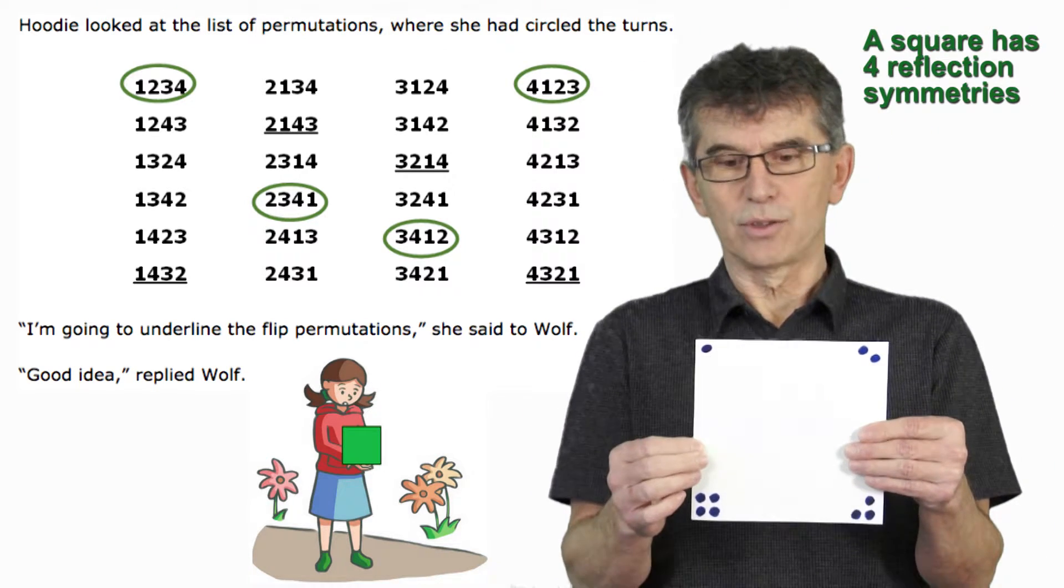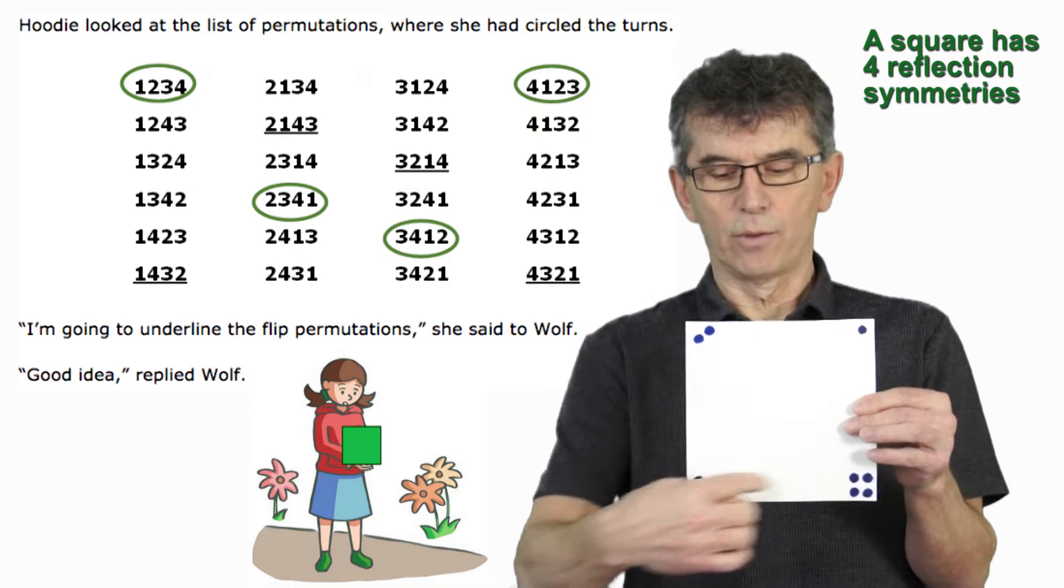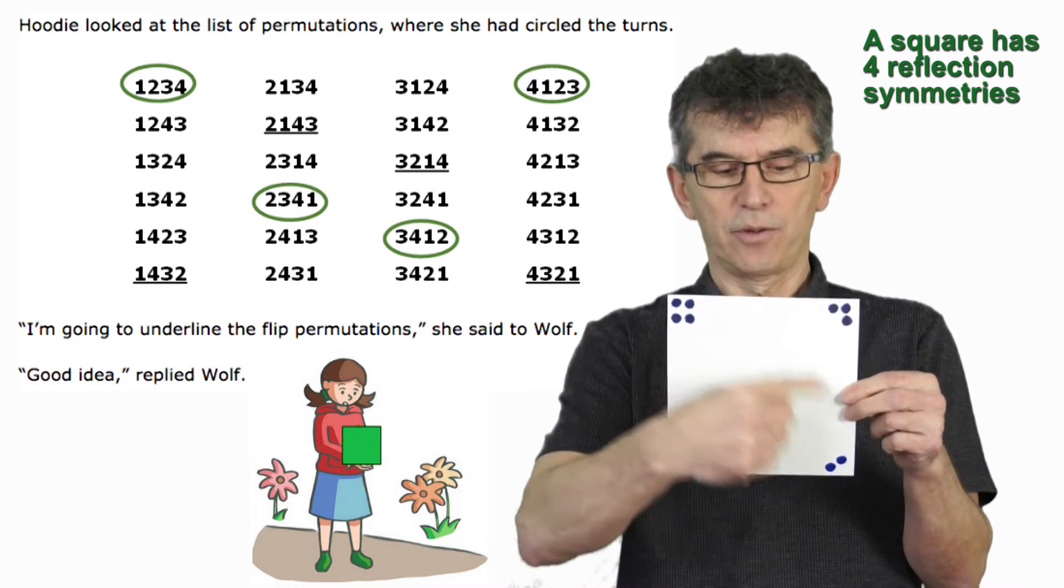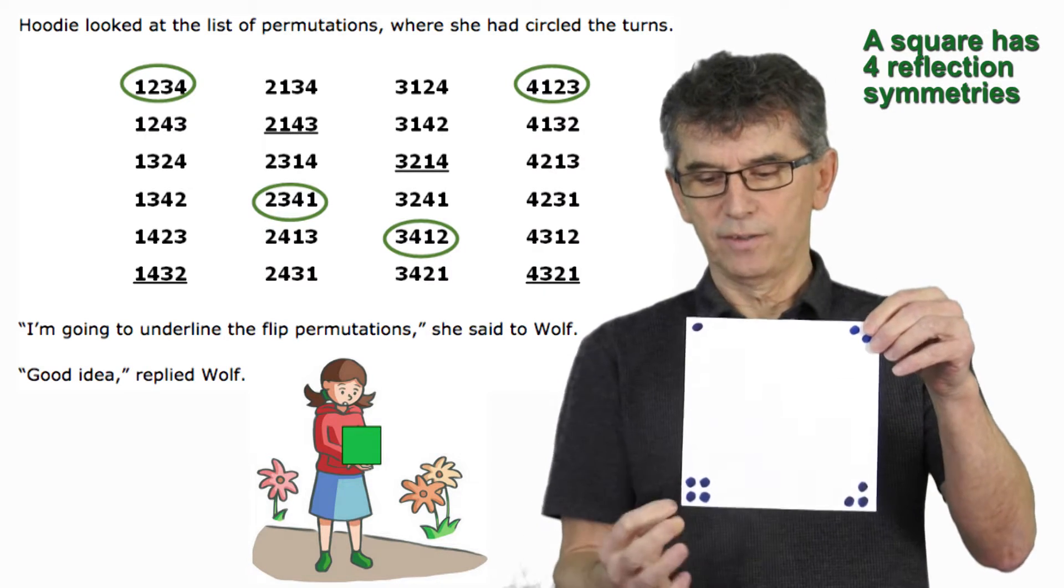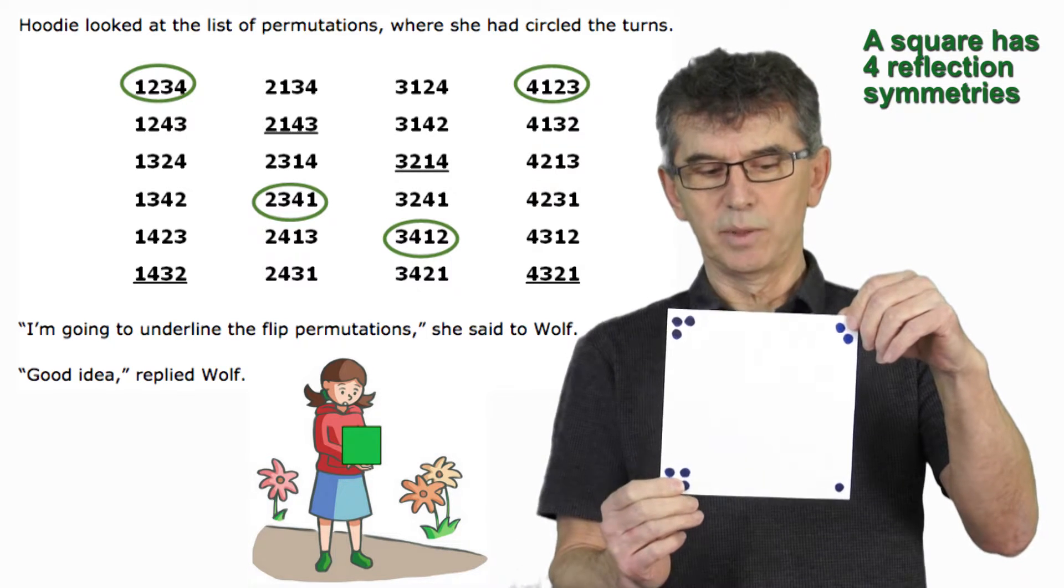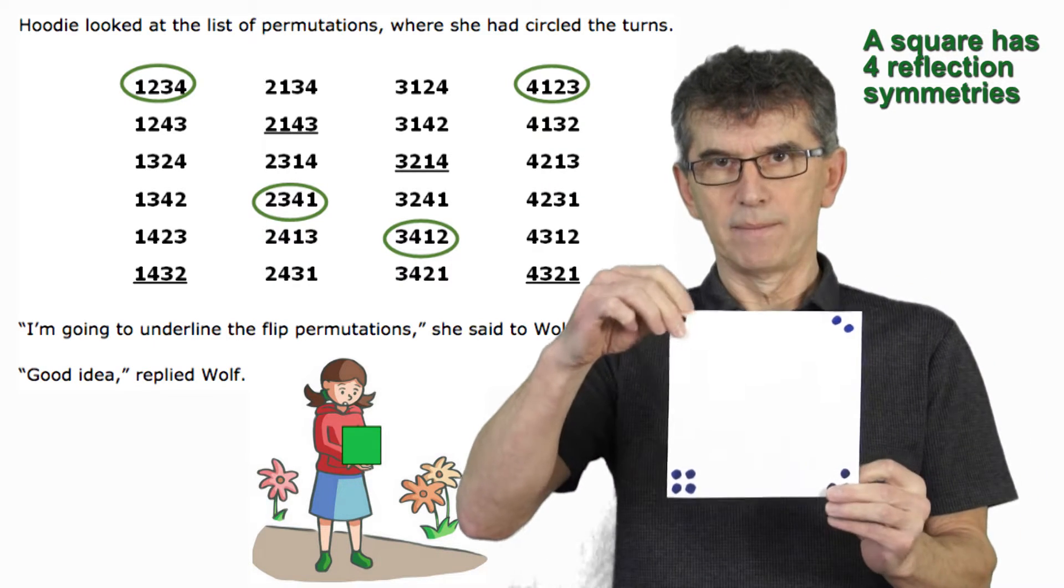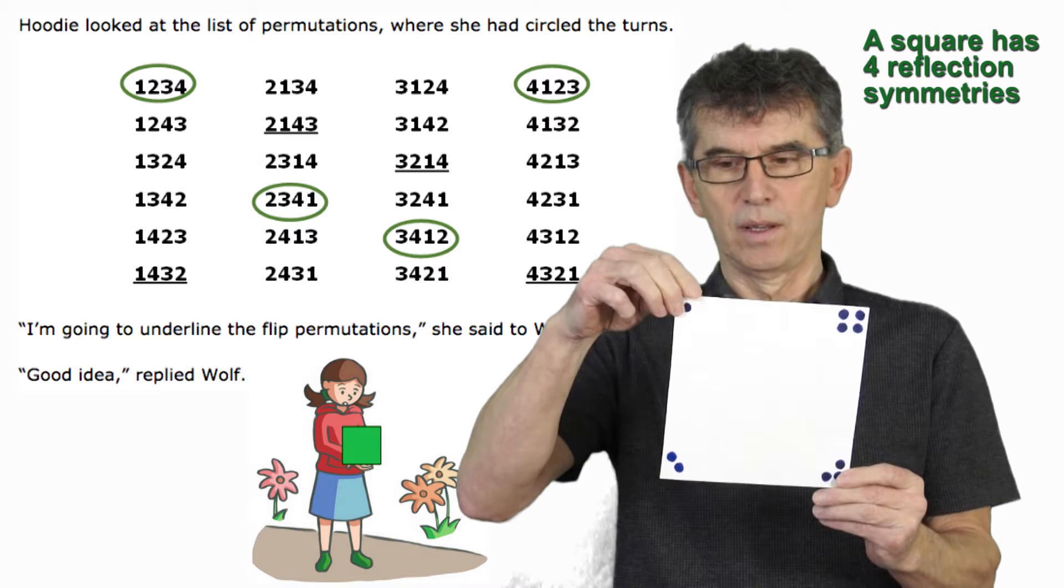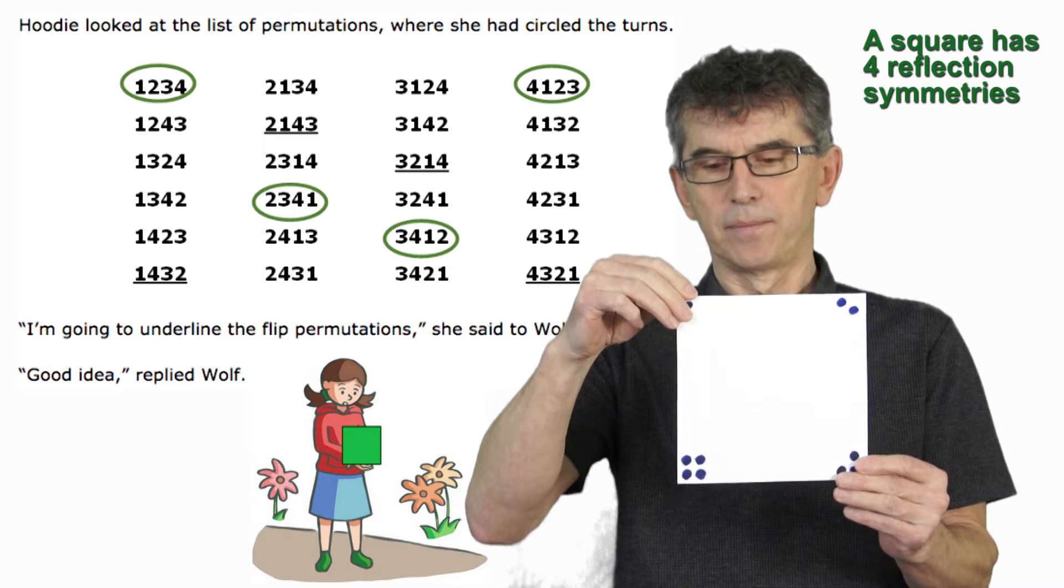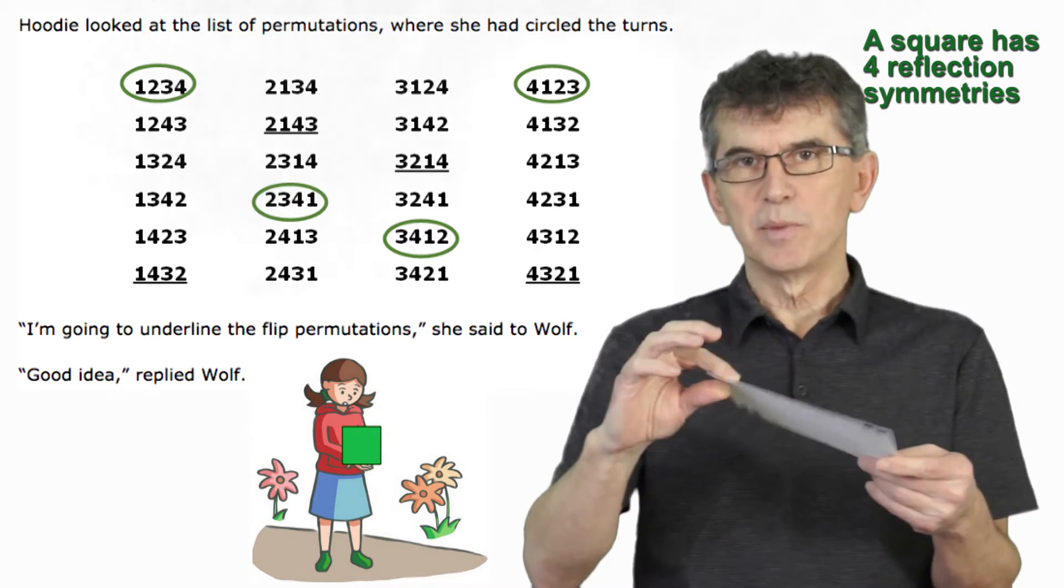What about reflections? Well, I could reflect it this way. That would give me 2, 1, 4, 3. I could reflect it this way. 4, 3, 2, 1. And I could also reflect it across this diagonal and just flip it like this. So we get 3, 2, 1, 4. Or I could do it this way. 1, 4, 3, 2. And back again. So there are four different arrangements of those vertices.